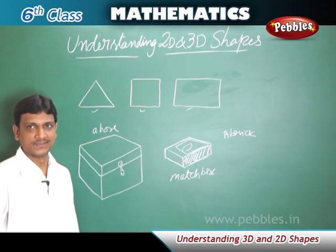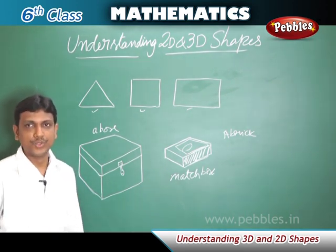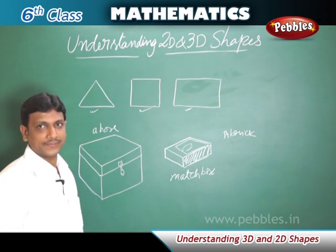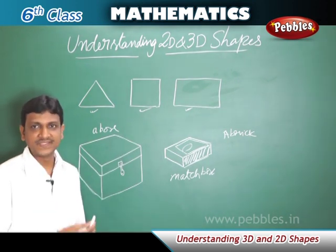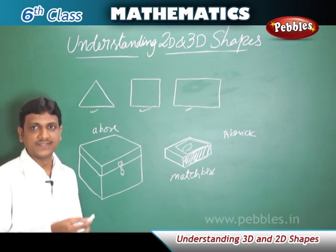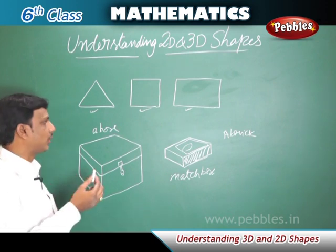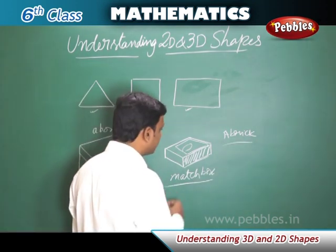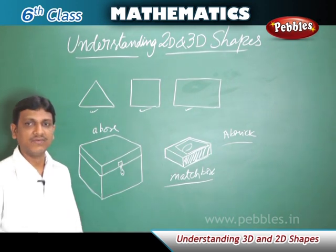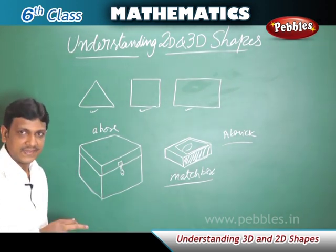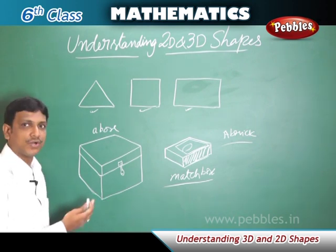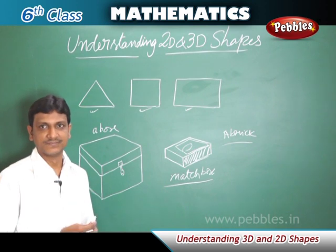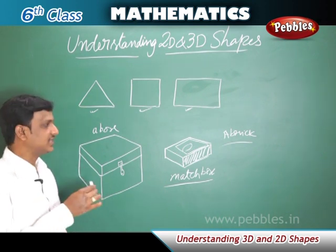Understanding 2D and 3D shapes. In previous chapters you learned about basic geometrical shapes like triangle, square, rectangle, and so on. These shapes are 2D shapes, meaning they have only two dimensions: length and breadth. Solid objects like a box, a matchbox, or a brick have three dimensions: length, breadth, and height or depth. Shapes with three dimensions are called three-dimensional shapes, or 3D shapes.